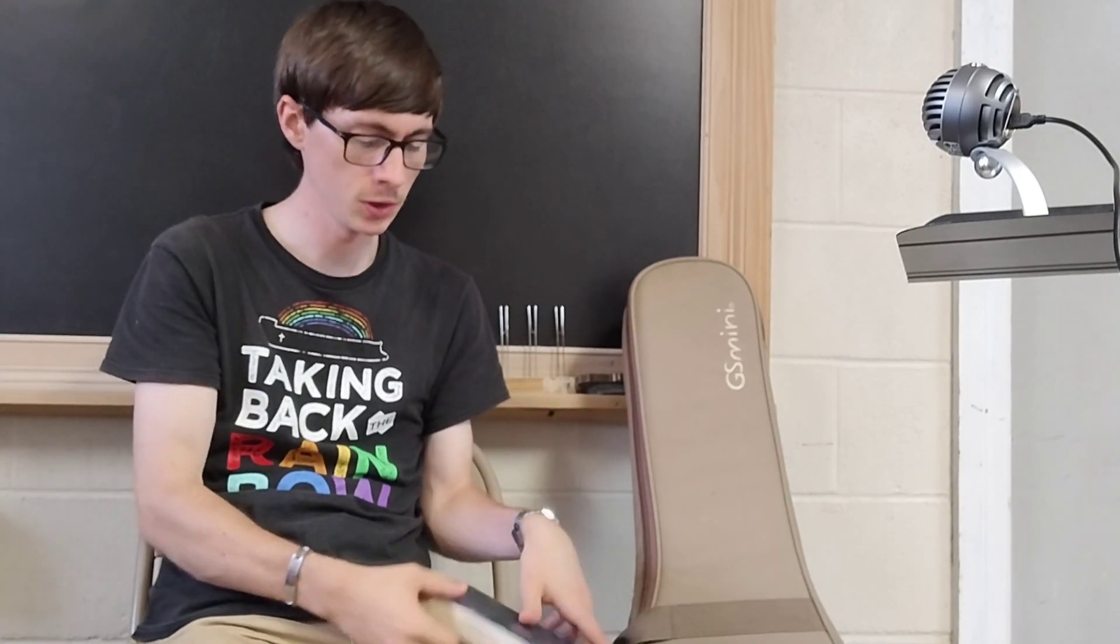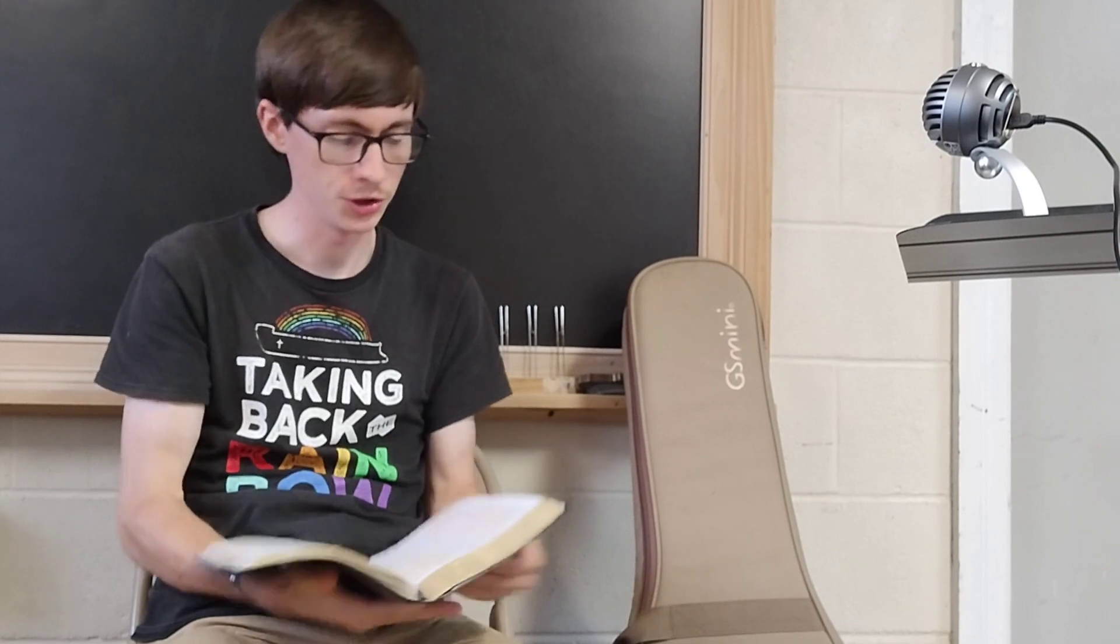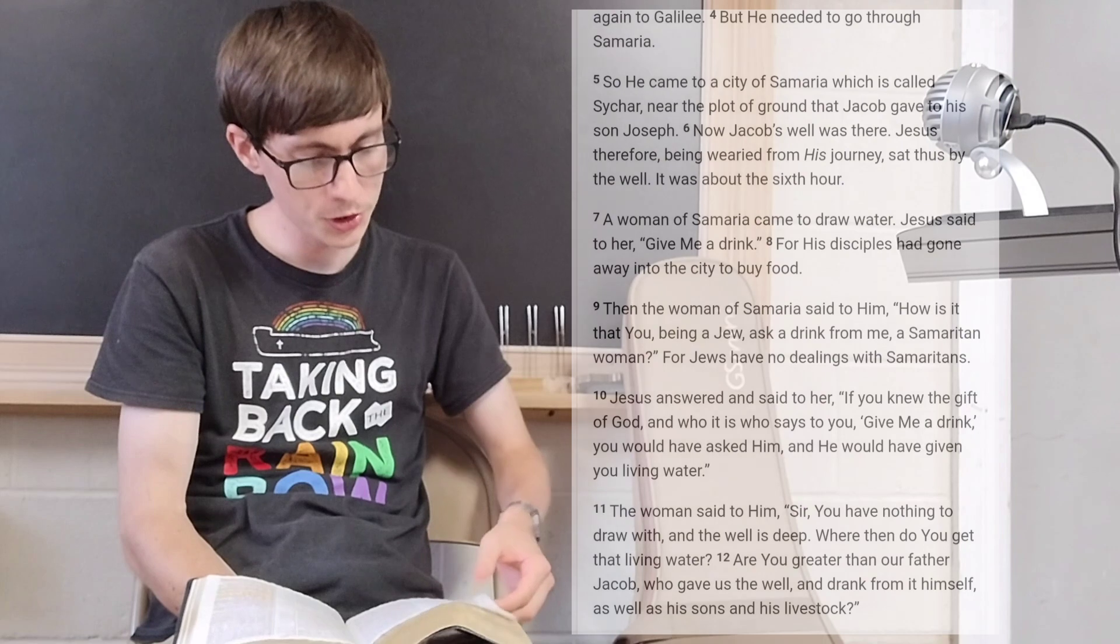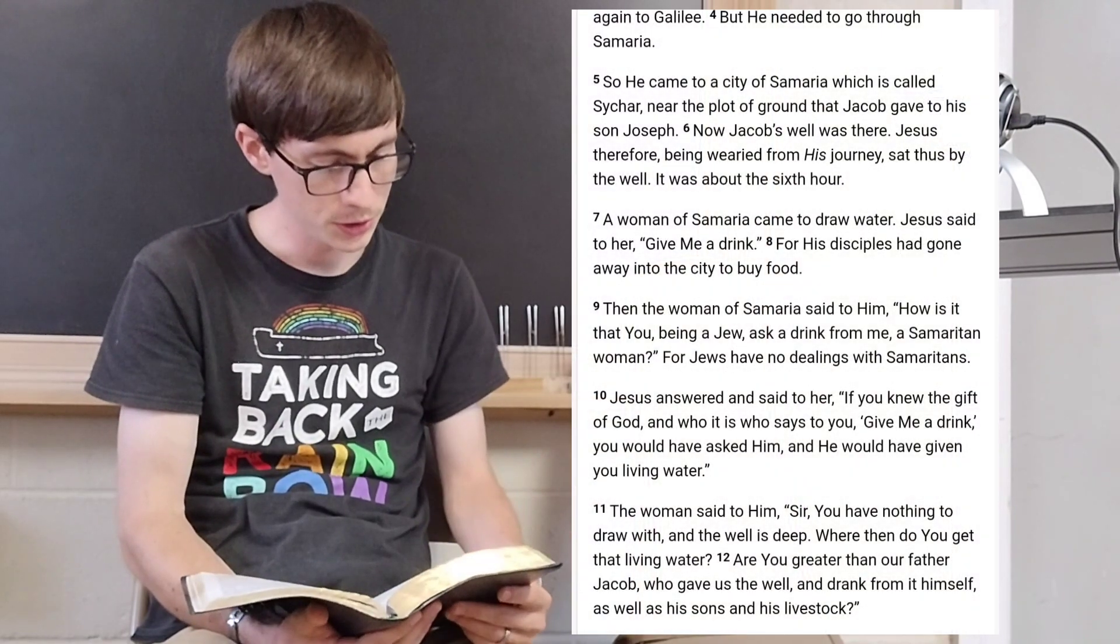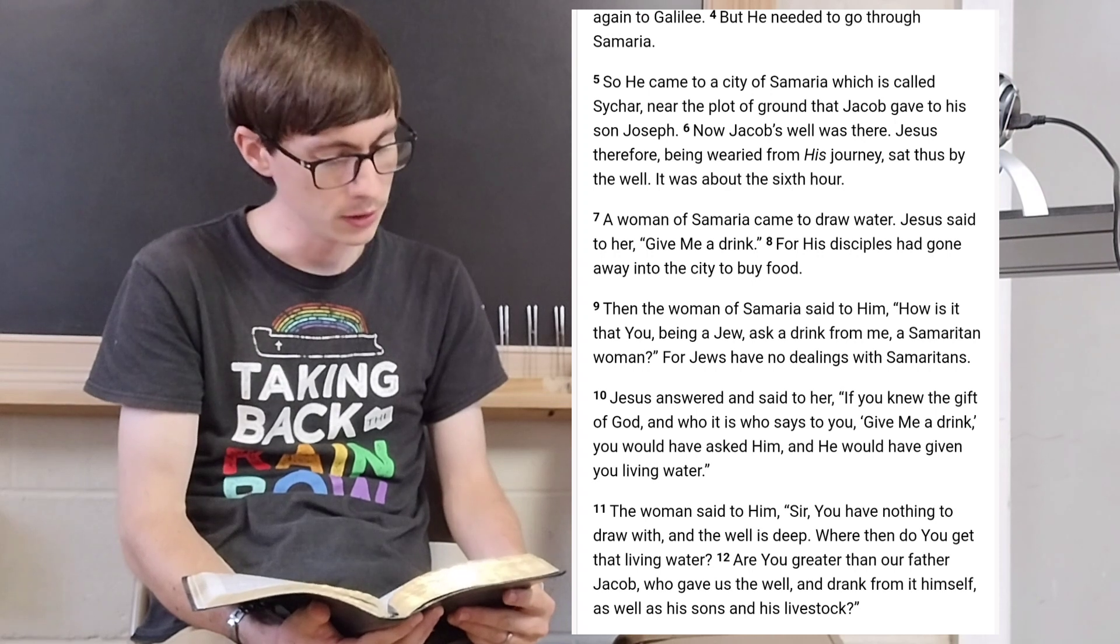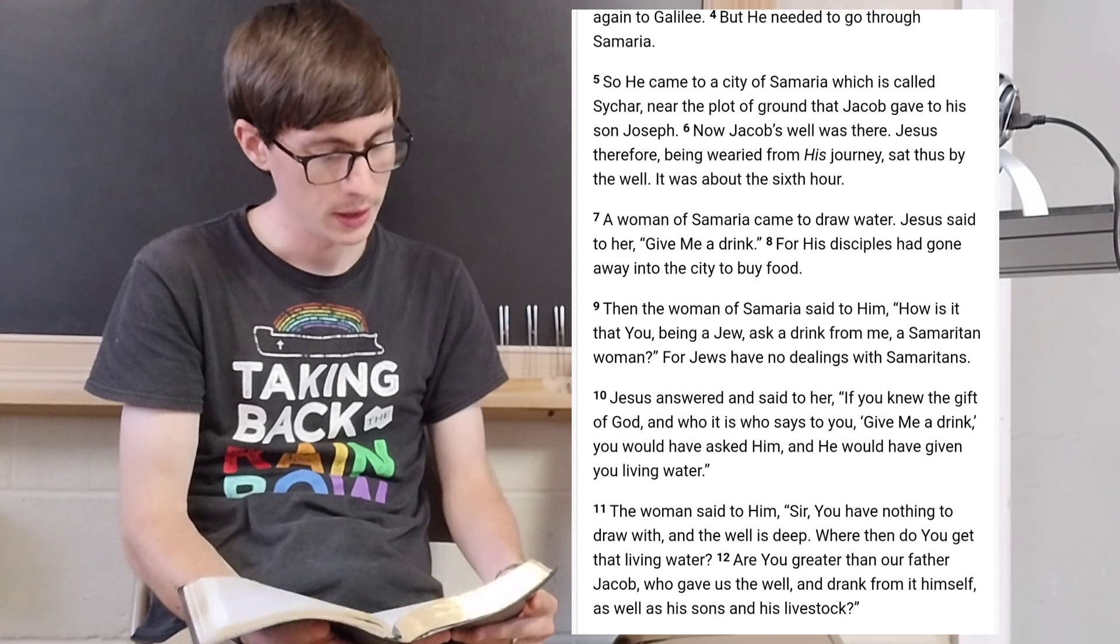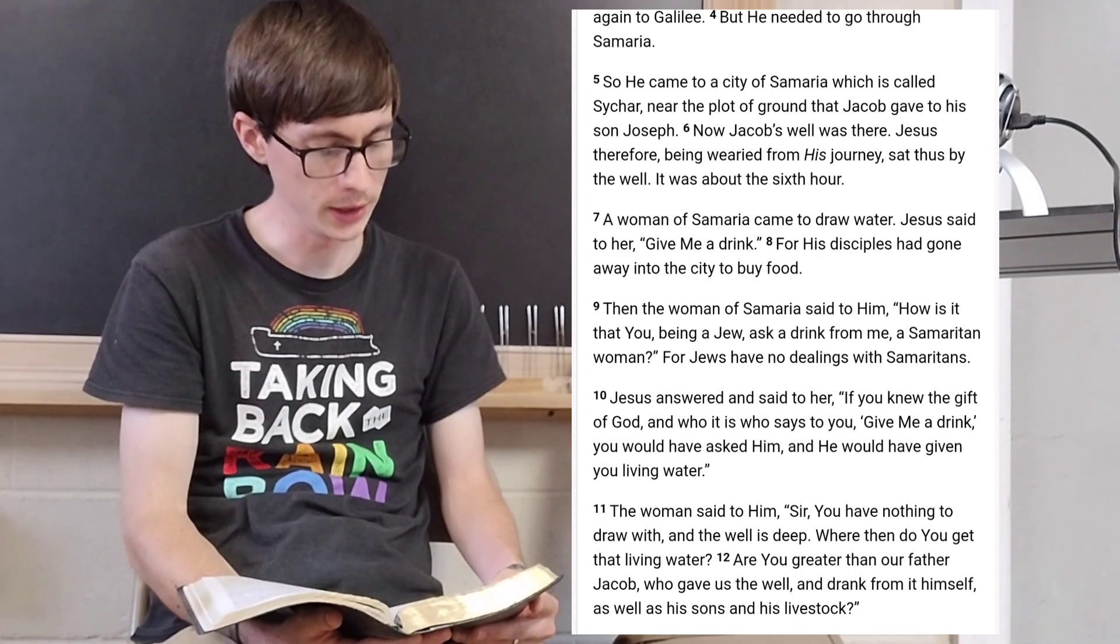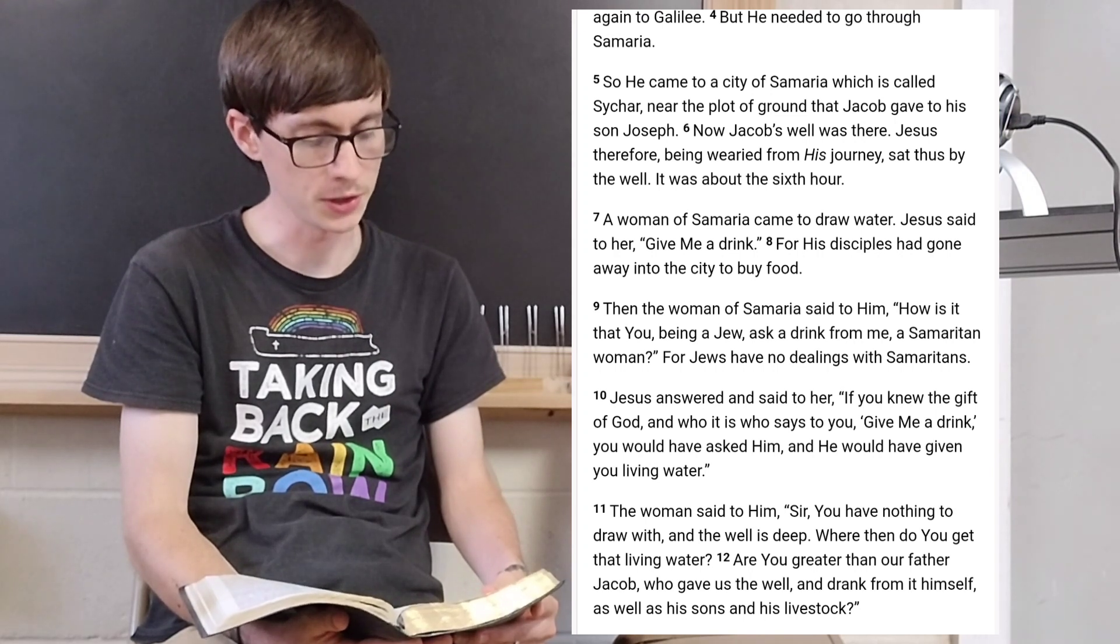So what is love? How do we define it? Well, I think John did this pretty well. In chapter 4 of his gospel, he needed to go through Samaria. And he came to the city of Samaria, which is called Sychar, near the plot of the ground that Jacob gave to his son Joseph. Now Jacob's well was there, and Jesus, therefore, being wearied from his journey, sat thus by the well. It was about the sixth hour.